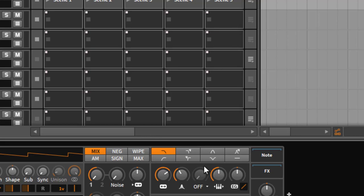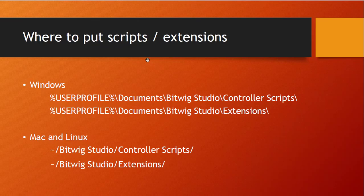Let's talk about folders. Bitwig stores extensions and controller scripts in two directories. JavaScript implementations go in the 'Controller Scripts' folder, and Java implementations go in the 'Extensions' folder. You'll find both folders inside the Bitwig Studio folder. On Windows they're under your user's Documents folder; on Mac and Linux they're one level up, directly in your home directory under 'Bitwig Studio.'